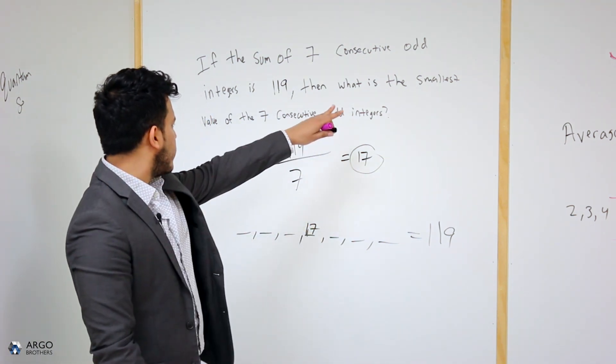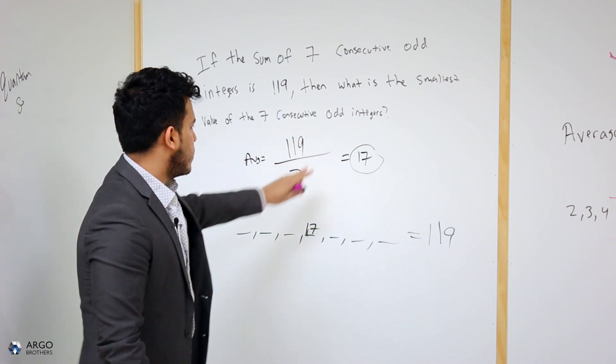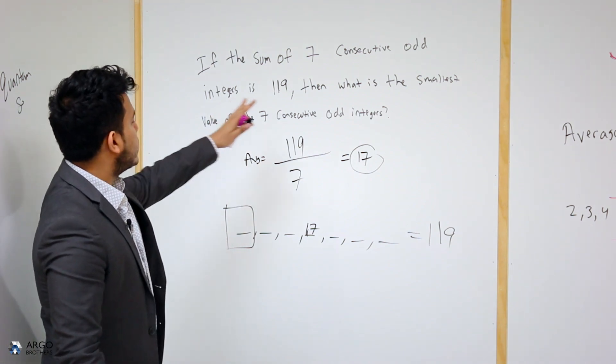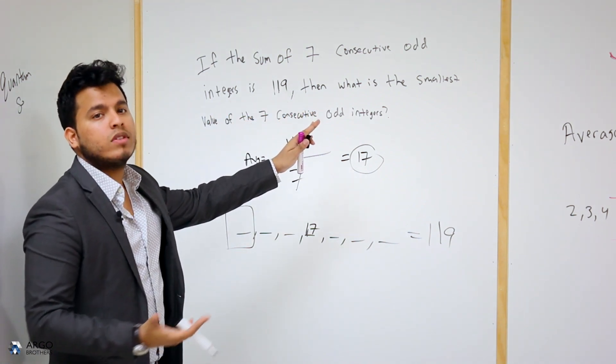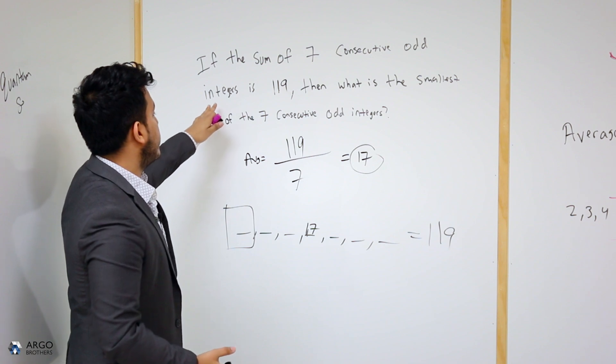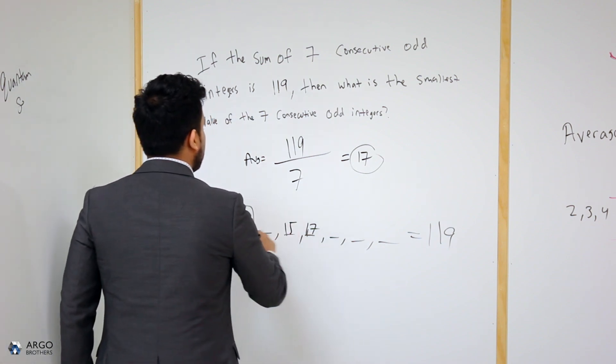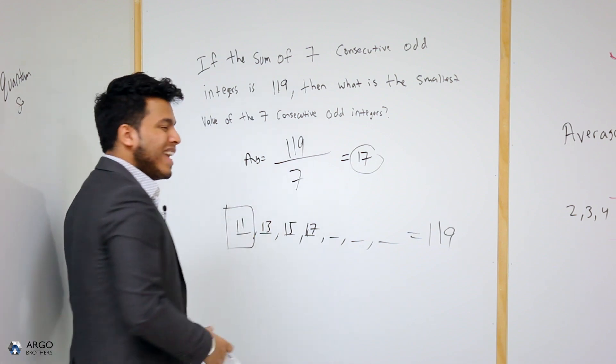And what are they asking for? The smallest value of the seven consecutive odd integers. So I'm trying to locate this box over here, this number over here. And once again, be very careful to see if it's an odd or even consecutive integer series. Over here, it's odd. So simply go down, 15, 13, 11. And the answer is 11.